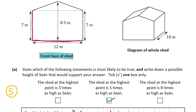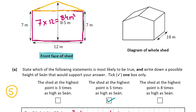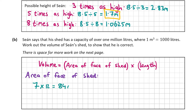I've marked the rectangle in pink and the triangle in yellow. Starting with the area of the rectangle — the formula is length by width. In our case that's 7 multiplied by 12, which gives us 84 meters squared. So that's the area of the pink rectangle.